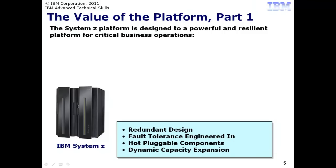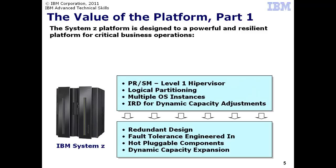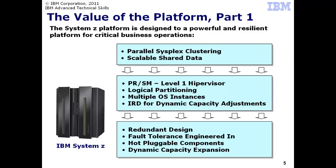Down at the hardware level, System Z is designed to perform at a high level and provide a high degree of availability. The hardware is designed to be redundant and fault tolerant at nearly every critical point of its construction. On top of that is provided a hypervisor function that permits the logical partitioning of the physical resources, allowing you to construct multiple operating systems on a given server machine, each with complete and secure isolation from one another. Platform resources may be dynamically shifted between logical partitions, either manually or automatically with the help of Intelligent Resource Director.